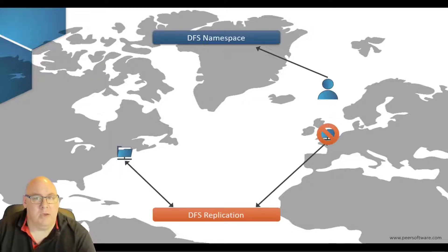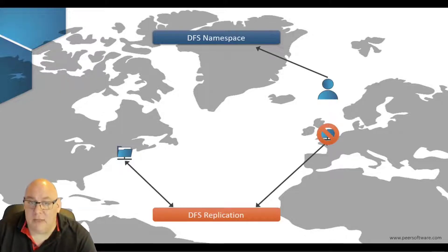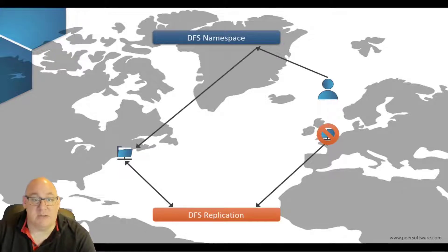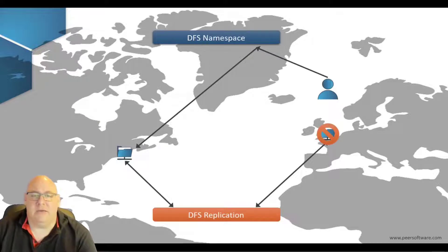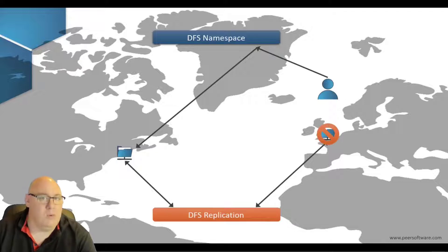If the folder target at the London data centre goes offline, the DFS Namespace will realise that and will automatically switch the users in London over to the folder target at the New York data centre so that they can continue working. This automatic switching over of users when the folder target they were using goes offline is known as a failover.